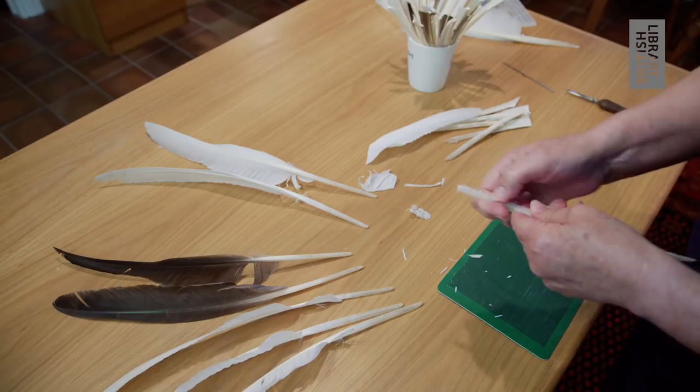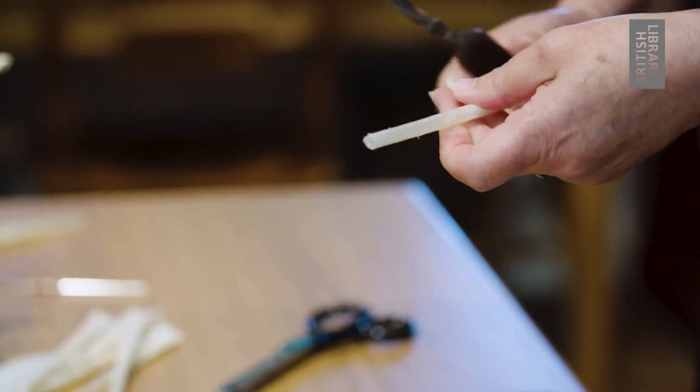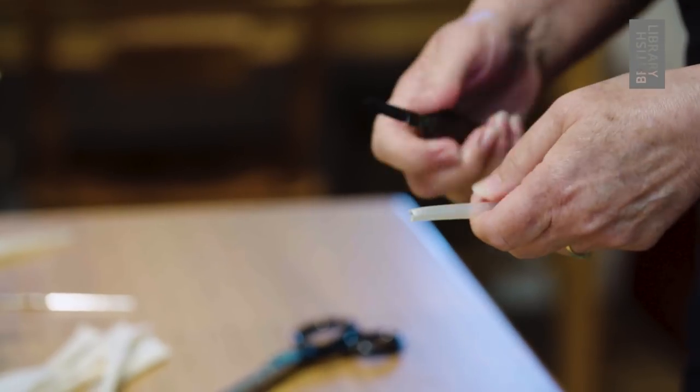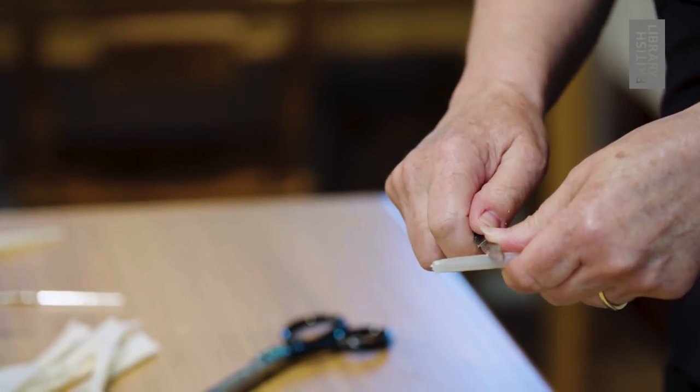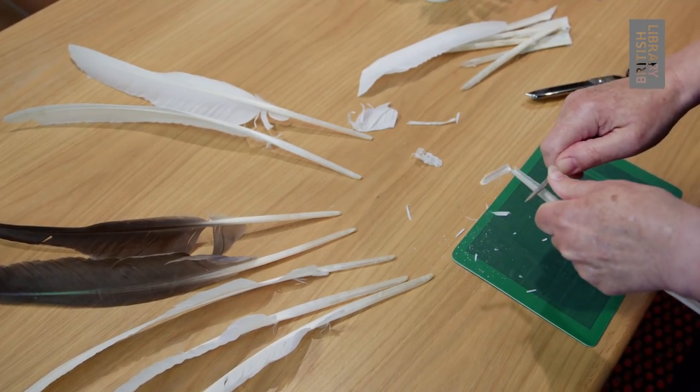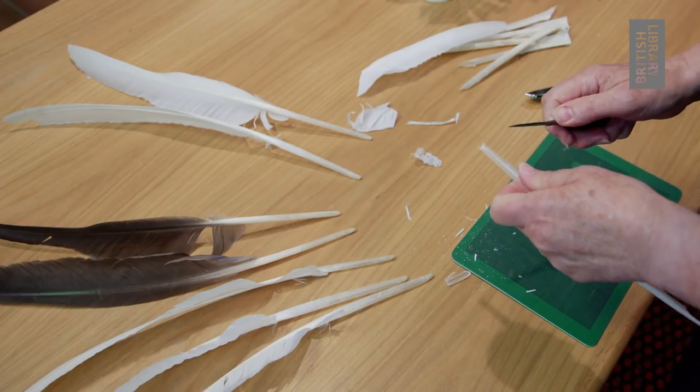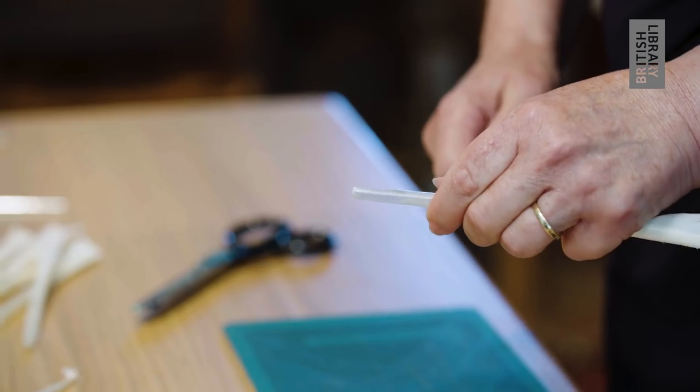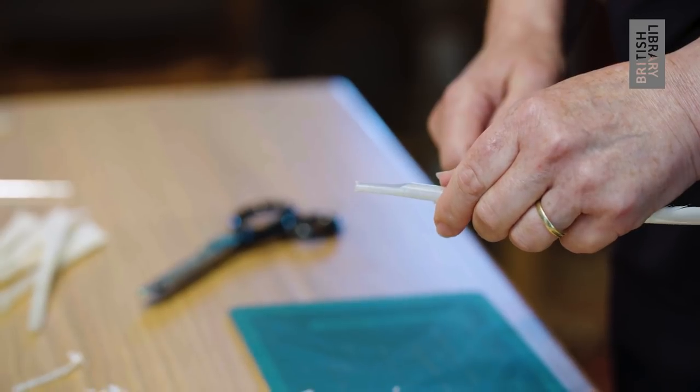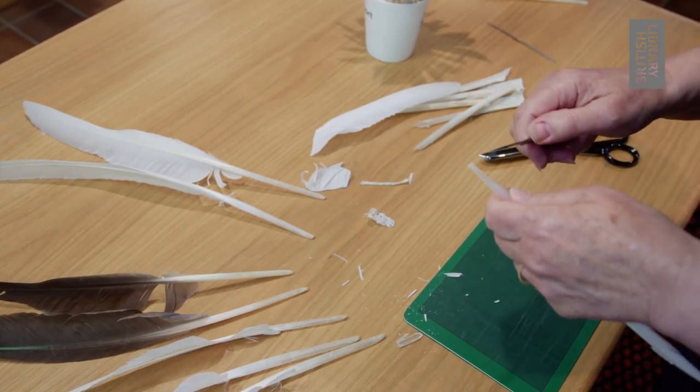Then the nib shape is cut into the tip of the feather. We use a curved bladed knife, because traditionally this is a pen knife. The first cut is the scoop cut, which is about just over an inch from the tip of the feather. It goes at an angle in and along the length of the feather, about halfway through.